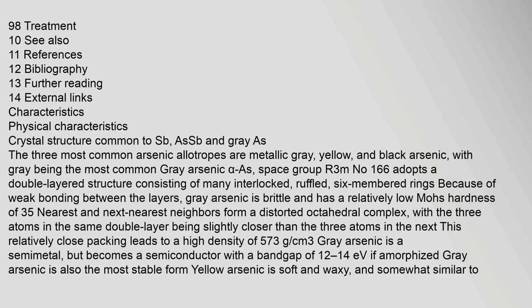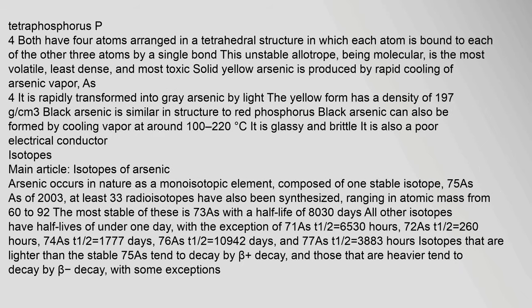Gray arsenic has a relatively low Mohs hardness of 3.5. Nearest and next nearest neighbors form a distorted octahedral complex, with the three atoms in the same double layer being slightly closer than the three atoms in the next. This relatively close packing leads to a high density of 5.73 g/cc. Yellow arsenic is produced by rapid cooling of arsenic vapor (As4); it is rapidly transformed into gray arsenic by light and has a density of 1.97 g/cc. Black arsenic is similar in structure to red phosphorus and can be formed by cooling vapor at around 100–220°C.